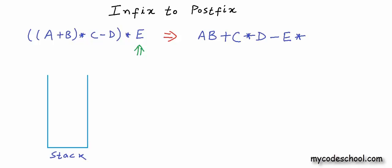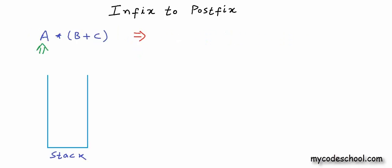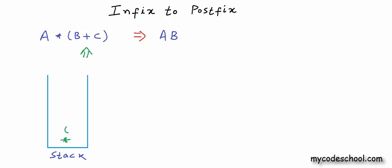I will take one more example. We start with an operand, then a multiplication operator goes onto the stack since it is empty. Next, an opening parenthesis is pushed. Next, an operand is appended. Then the addition operator — if the opening parenthesis were not there, the multiplication on the stack would have been popped, but since the top is an opening parenthesis we cannot look below, so addition is pushed. Then C is appended. A closing parenthesis means we pop until the opening: plus is appended, then the opening is popped. Finally we have reached the end of the expression, so everything remaining in the stack is popped. This is my postfix form.